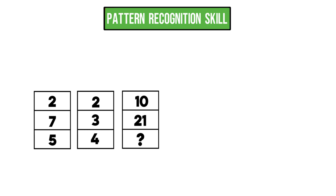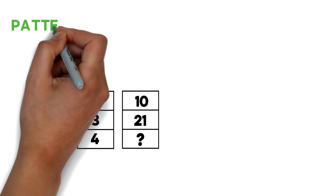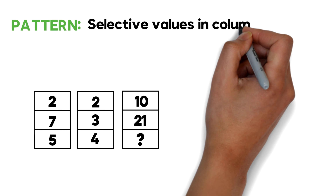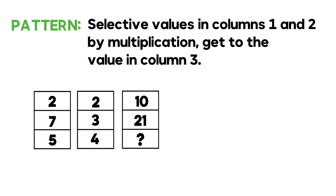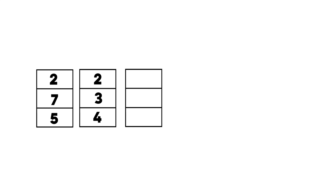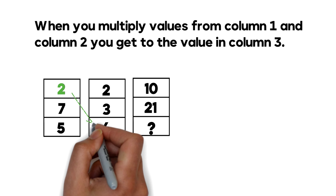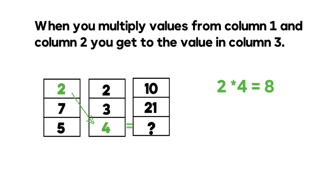The most important skill to solve these problems is pattern recognition. Look closely at each column: values in columns one and two multiplied together give the value in column three. For example, 5 times 2 equals 10; 7 times 3 equals 21. So the missing value is 2 times 4, which equals 8. The correct answer is choice A.